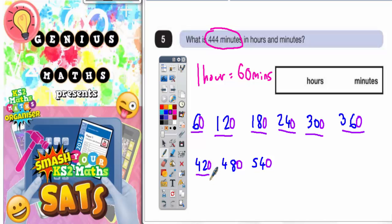So if you write out your 6 times table and then put a 0 on the end, you've got your 60 times table. So all we need to do now is figure out how many hours this is that we can get into 444 minutes.